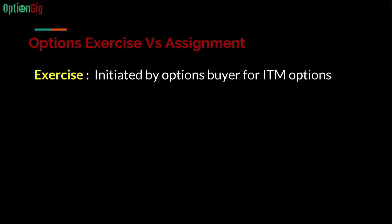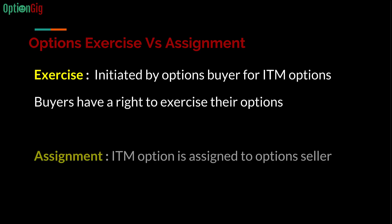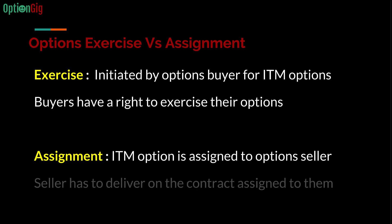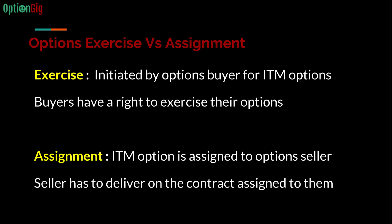Let's understand the difference between exercise and assignment. Exercise is initiated by option buyers for in-the-money options. As an option buyer, if your option is in the money and you want to exercise your right — whether a call right or a put right — you exercise that right as a buyer. Assignment, on the other hand, is what happens to the option seller. The seller is assigned the option that was exercised by the buyer and must deliver on the contract.